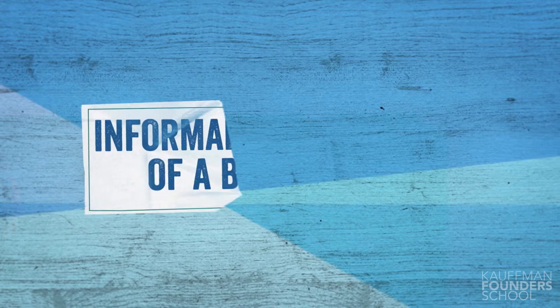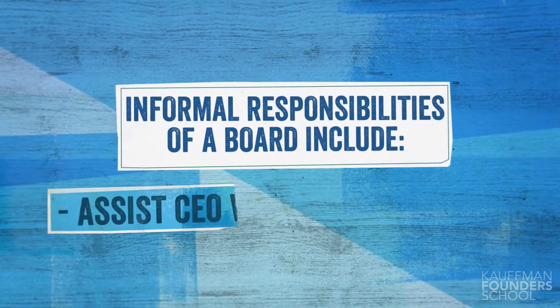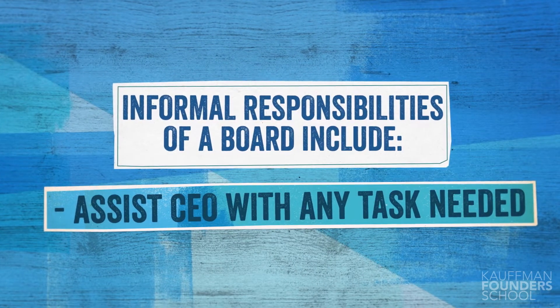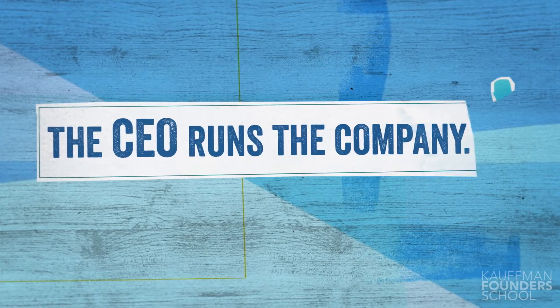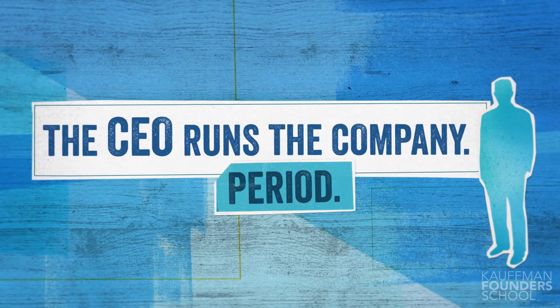The informal responsibilities of the board are often the ones that have the most impact. As an investor, my responsibility is to do anything that the CEO needs to be successful. Whatever he or she wants as help from me as a board member, that's my job. When you think about the functional responsibilities around the company and the division of labor between a CEO and a board, it's very easy to define the boundaries. The CEO runs the company, period.